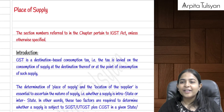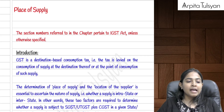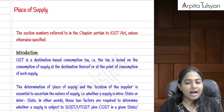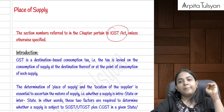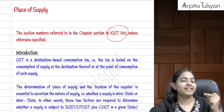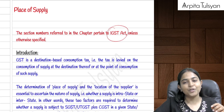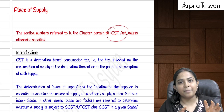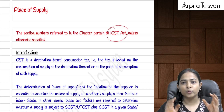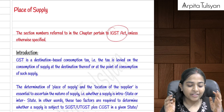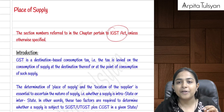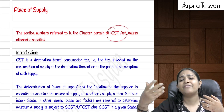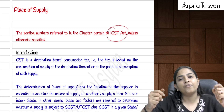Let's start with a quick revision of the Place of Supply chapter. Section numbers in this chapter refer to the IGST Act unless specifically stated otherwise. GST is a consumption-based, destination-based act, so revenue should go to the state where goods are ultimately consumed. To determine whether a supply is interstate or intrastate, we need to identify the location of the supplier and the place of supply.